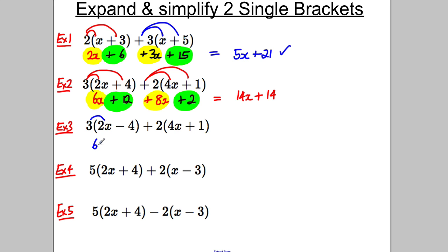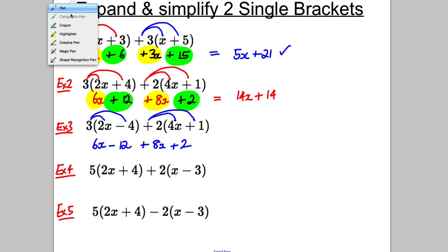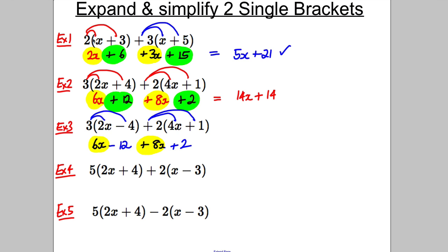Same thing with the next example. 3 multiplied by 2x is 6x. 3 multiplied by negative 4 is negative 12. 2 multiplied by 4x is positive 8x. 2 multiplied by 1 is positive 2. Now careful with negatives here. We've got 6x and positive 8x, and a negative 12 add a positive 2. So we've got 6x add 8x is 14x, as in example 2.